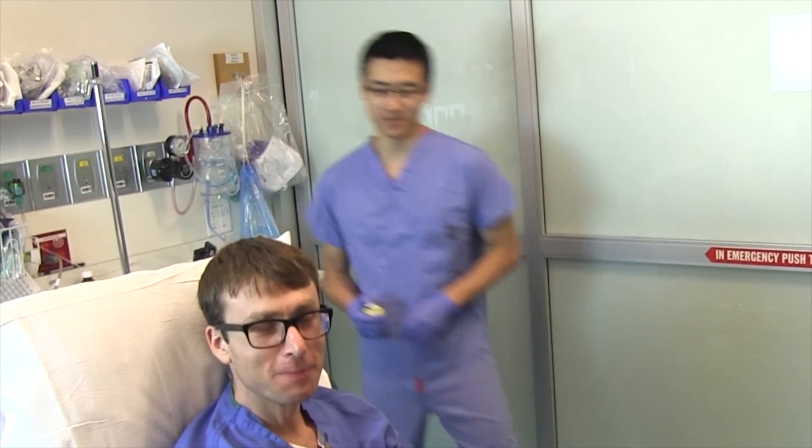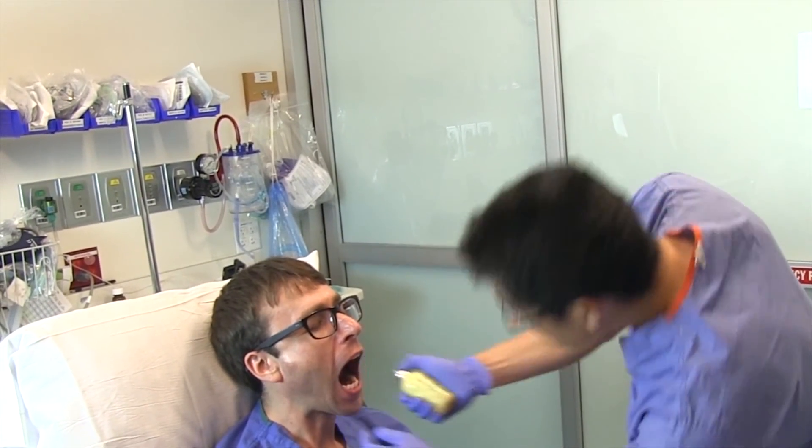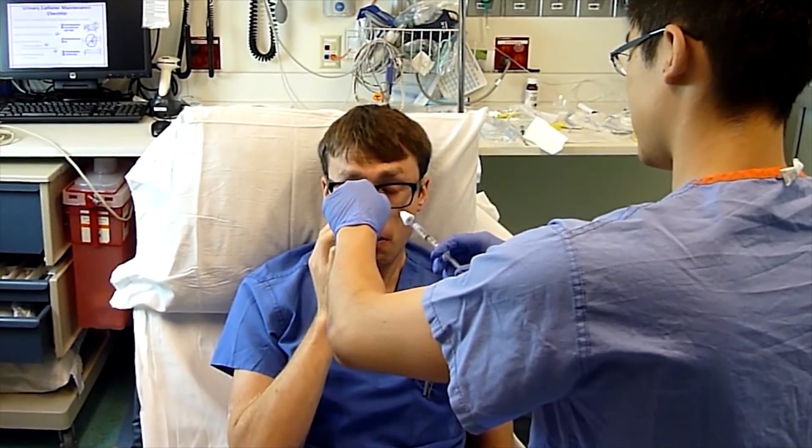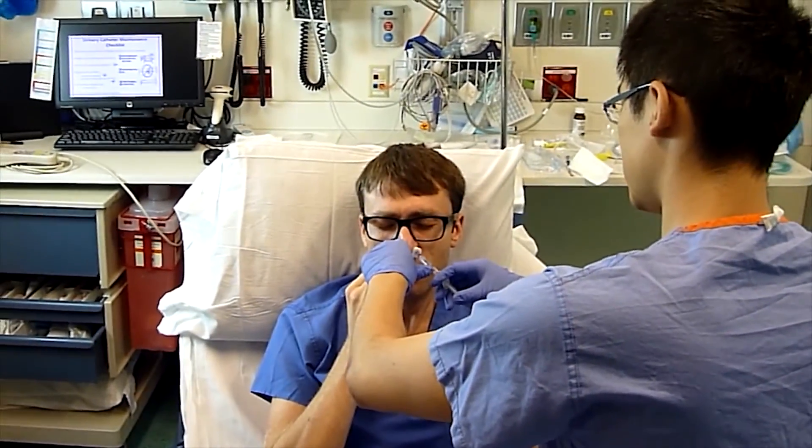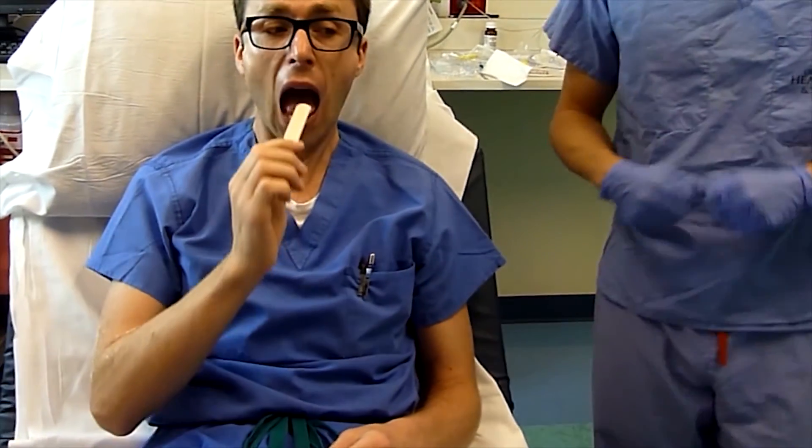I started by spraying some Cetacaine. It's banana flavored. Lidocaine works too. It just tastes worse. I next spray some lidocaine with epi into the nose. Afrin works equally well. We found that lidocaine cream on a tongue depressor really helps to suppress the gag reflex. But a nasal approach really doesn't stimulate gag.